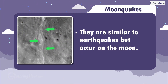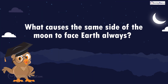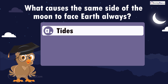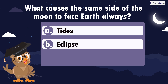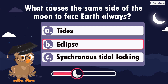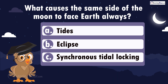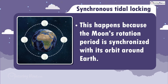What causes the same side of the moon to face Earth always? Is it A, tides; B, eclipse; or C, synchronous tidal locking? The correct answer is synchronous tidal locking. This happens because the moon's rotation period is synchronized with its orbit around Earth.